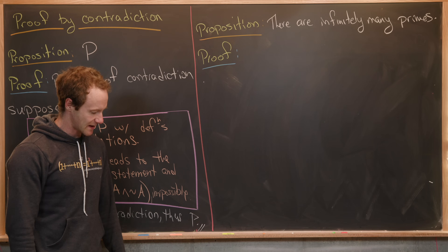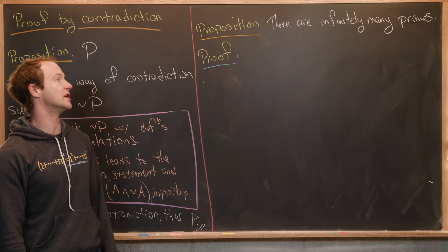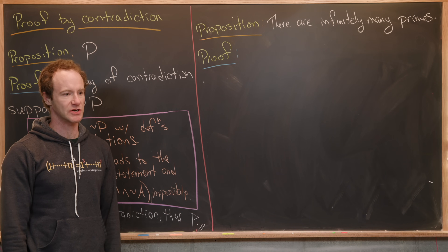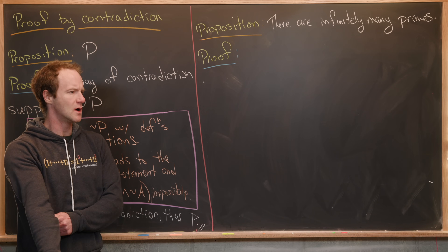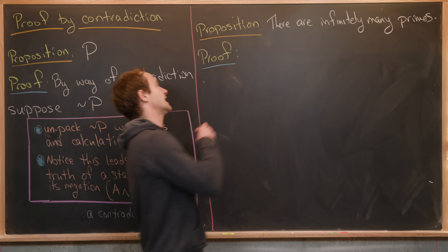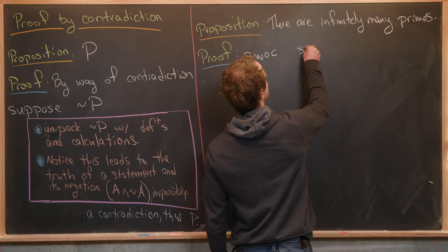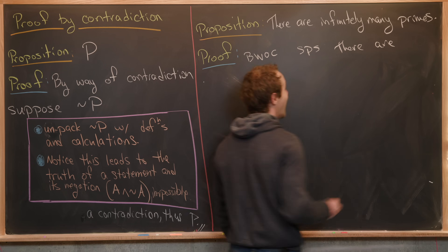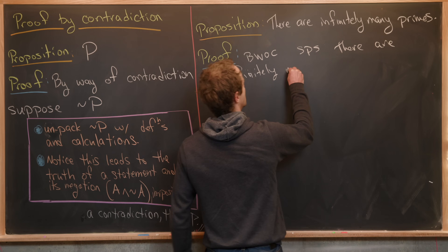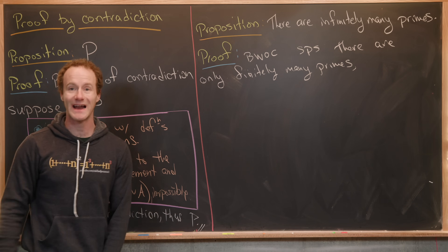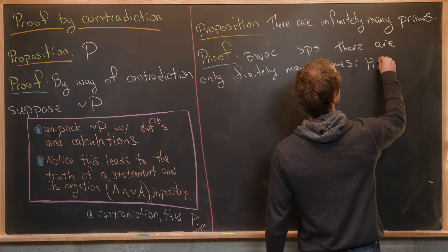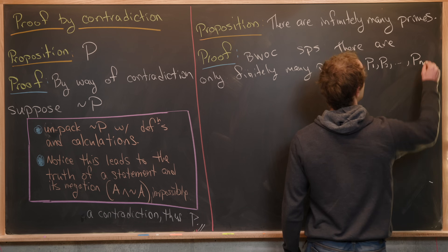Our next example is pretty classic — it's due to Euclid and has to do with the infinitude of primes. We're going to prove that there are infinitely many primes, and we'll do this by way of contradiction. There are a bunch of ways to do this. So by way of contradiction, suppose there are not infinitely many primes — in other words, there are only finitely many. If there are only finitely many primes, we can list them in a finite list: p₁, p₂, all the way up to pₙ.